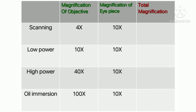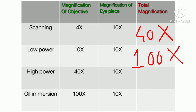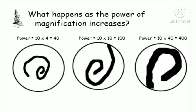Let's solve practice questions together. For scanning, it's 4 × 10 = 40x. For low power field, the objective is 10x and eyepiece is 10x, so 10 × 10 = 100x — meaning the image is enlarged 100 times the real object. For high power field, 40 × 10 = 400x. For oil immersion, 100 × 10 = 1000x.